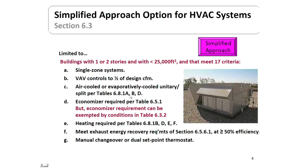Let me first cover the simplified approach because that would get you through to compliance the quickest. It does require you to have a fairly simple building — one to two stories and less than 25,000 square feet. It also has to meet all 17 of the listed requirements. It has to have single zone systems: it can have multiple zones in the building, but each system has to serve just one single zone.